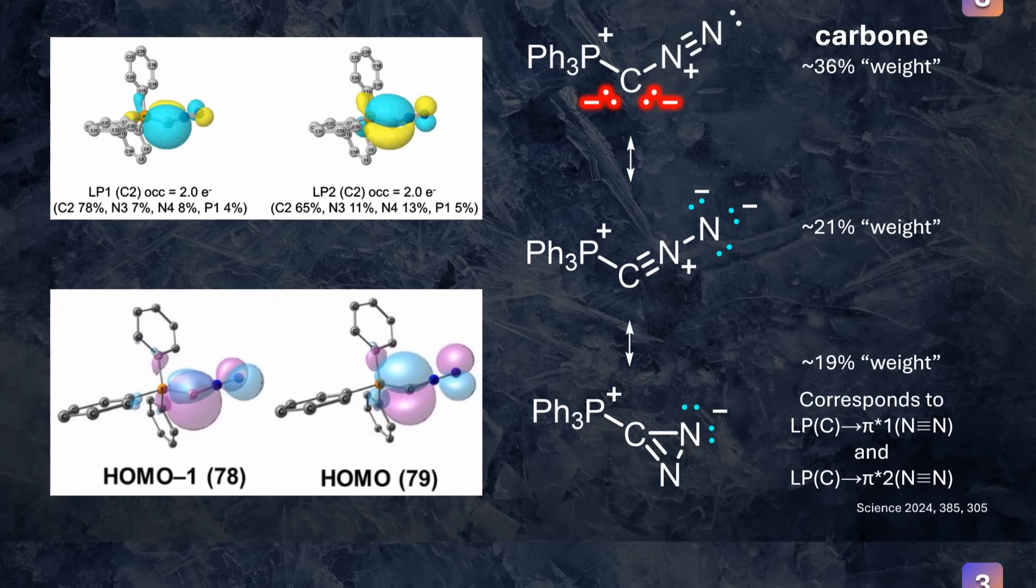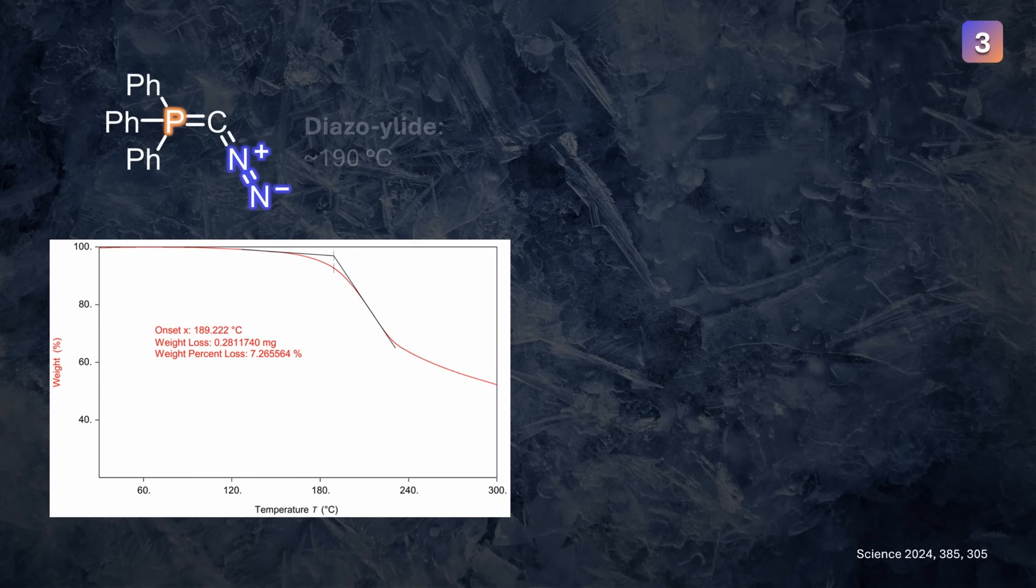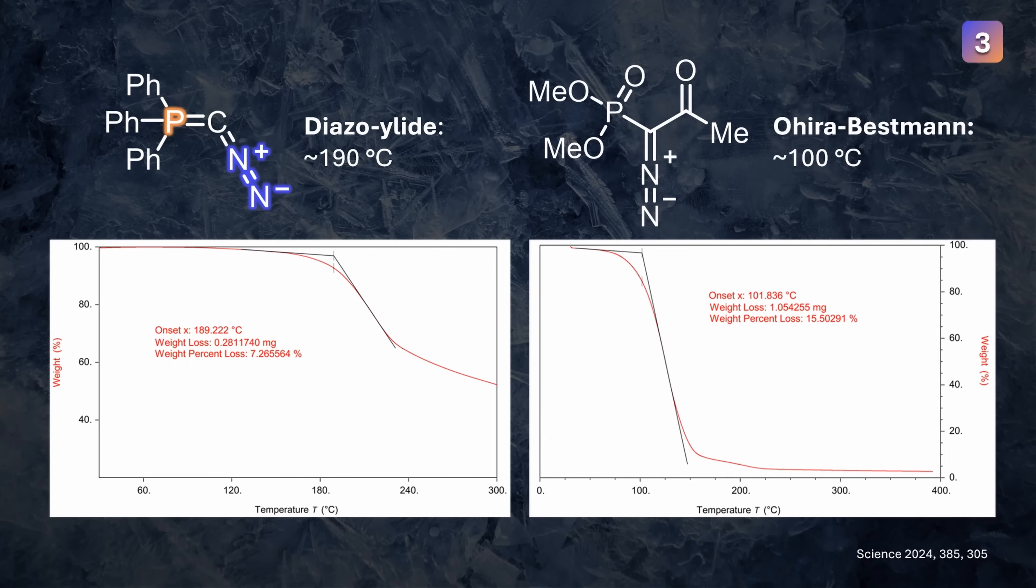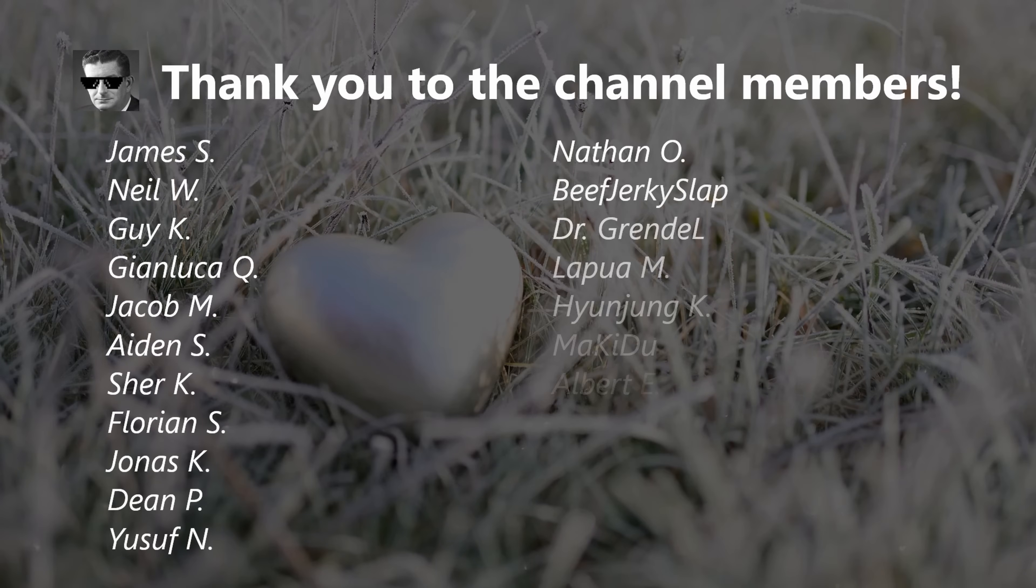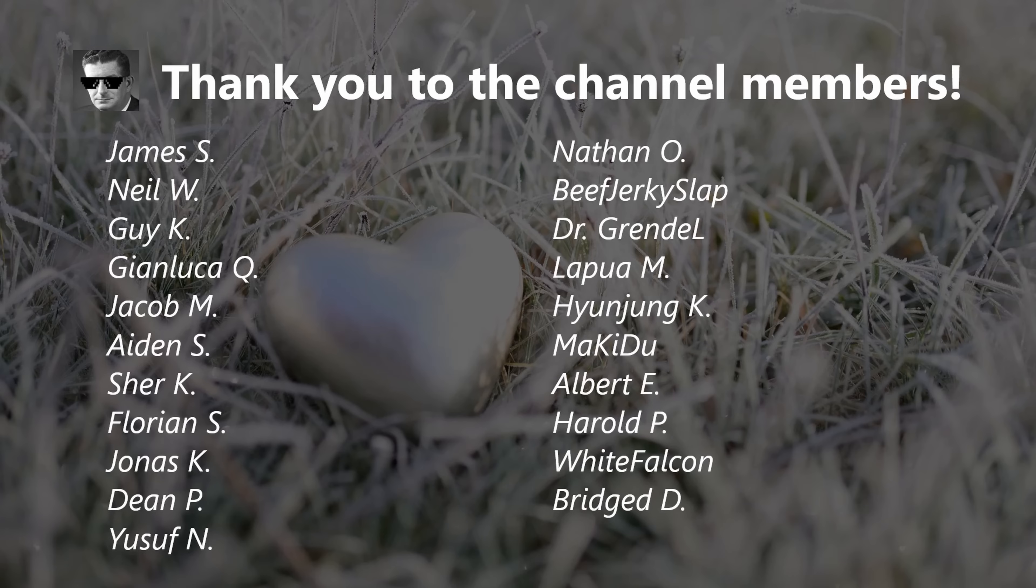We mentioned the precursor diphosphorane is pretty stable, but what about this one? These thermo-gravimetric curves show the mass remaining throughout continuous heating. Our trusted friend the Ohira-Bestmann reagent decomposes at around 100 degrees celsius already, even though you might think it's more stabilized. In contrast, our diazo ylid is pretty comfortable up until 190 with relatively controlled loss of N2. You know who else is pretty comfortable? I am, knowing that there are great folks out there supporting my work. Thanks to all the channel members and thank you for watching.